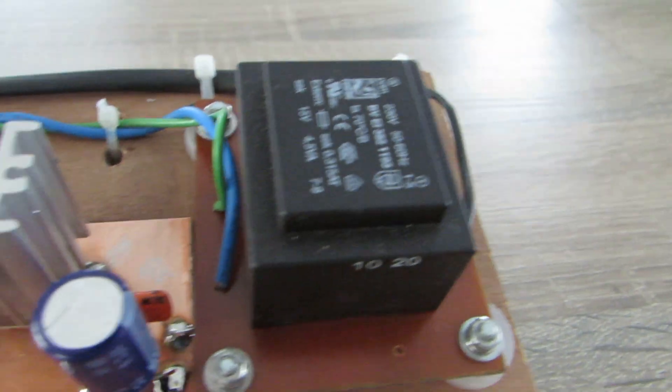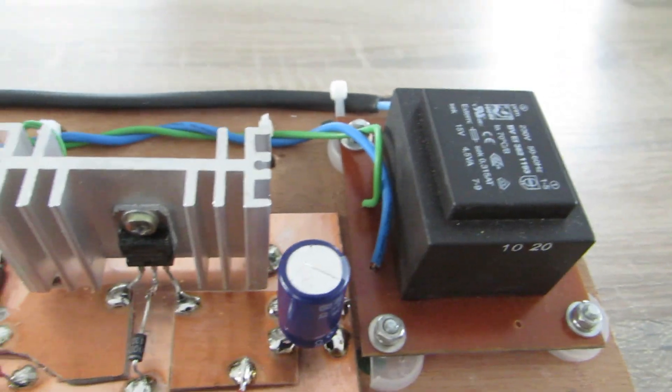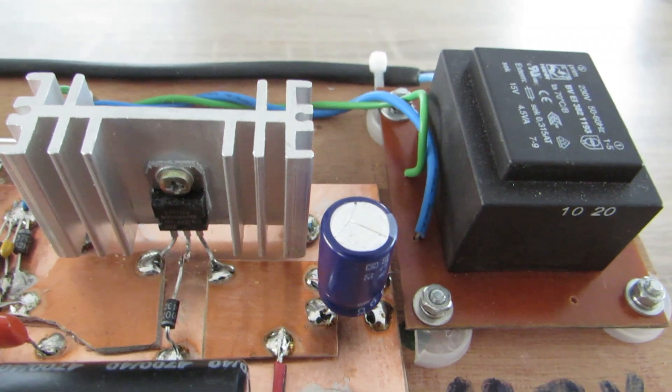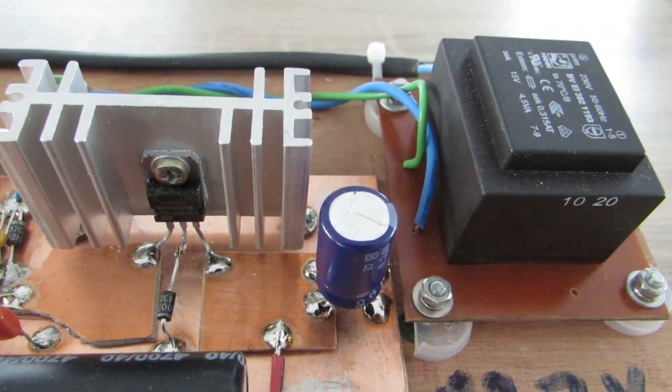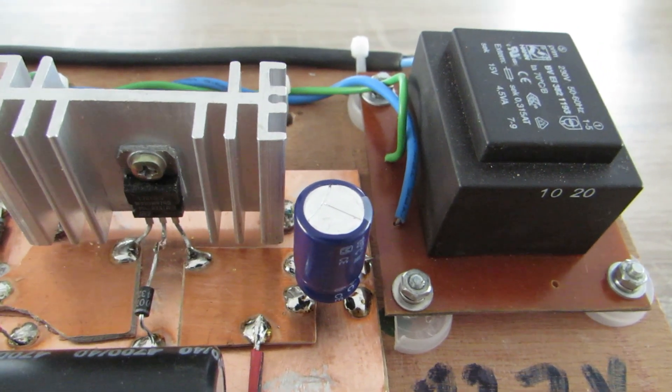The second transformer gives out 15V AC to get about 12.7V DC by means of the voltage regulator, the 7812 and this diode.